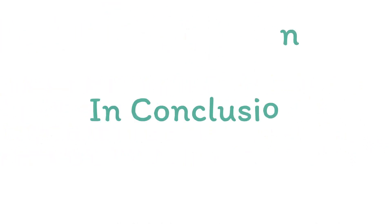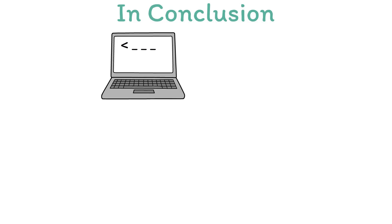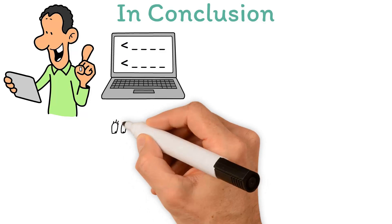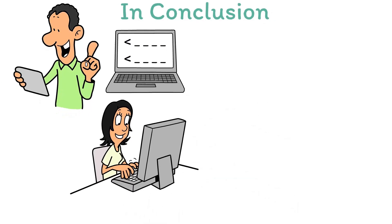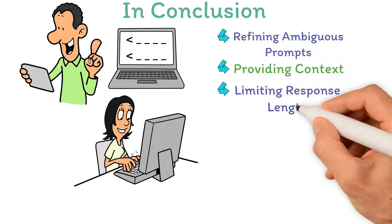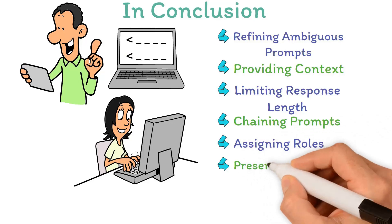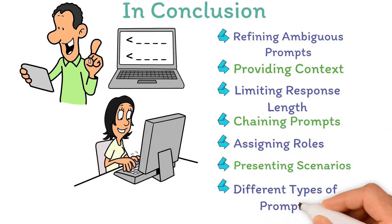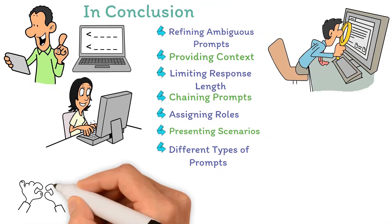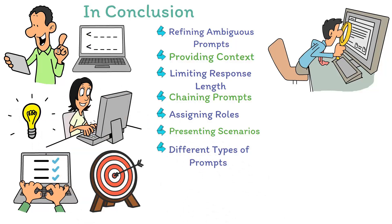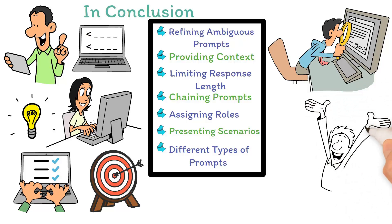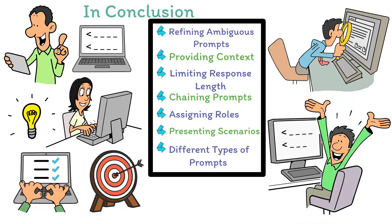In conclusion, the art of prompt engineering involves crafting effective prompts that elicit high-quality responses from AI language models. By understanding and applying various strategies such as refining ambiguous prompts, providing context, limiting response length, chaining prompts, assigning roles, presenting scenarios, and employing different types of prompts, prompt engineers can optimize the performance of AI prompts and generate more accurate, relevant, and insightful responses. Learning from these prompts, readers can enhance their prompt engineering skills and better utilize the potential of AI language models.